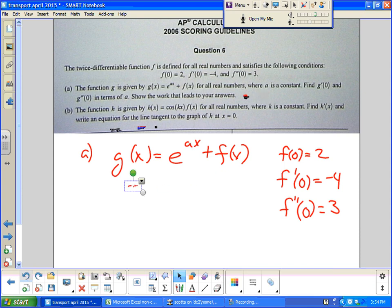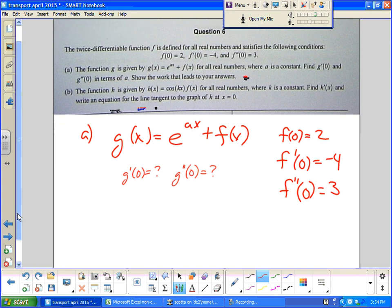Alright, so we're looking for this. We're looking for those two pieces of information. Twice differentiable function means this is a continuous function, guys. Because twice differentiable also means its derivative is continuous, f prime or g prime.